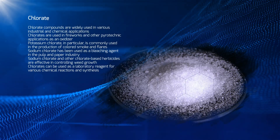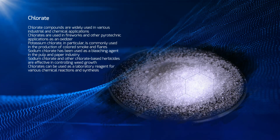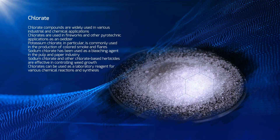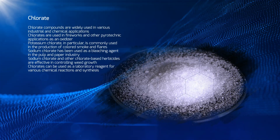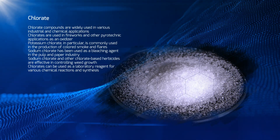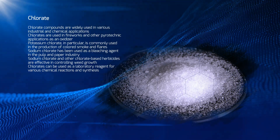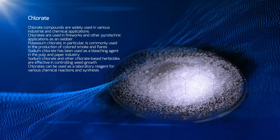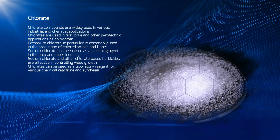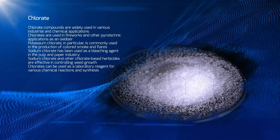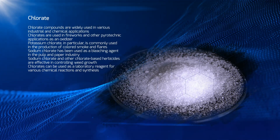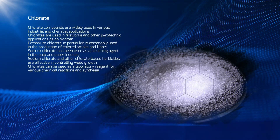Sodium chlorate has been used as a bleaching agent in the pulp and paper industry. Sodium chlorate and other chlorate-based herbicides are effective in controlling weed growth. Chlorates can also be used as a laboratory reagent for various chemical reactions and synthesis.